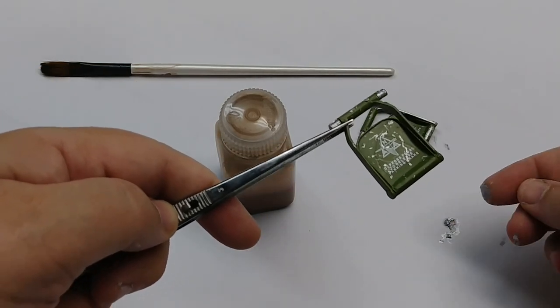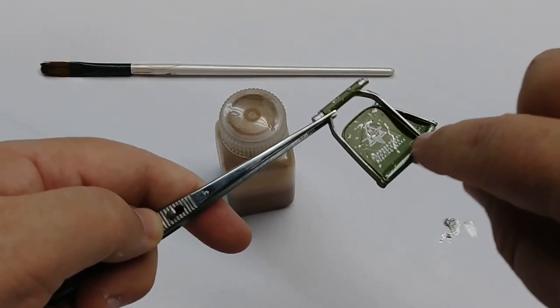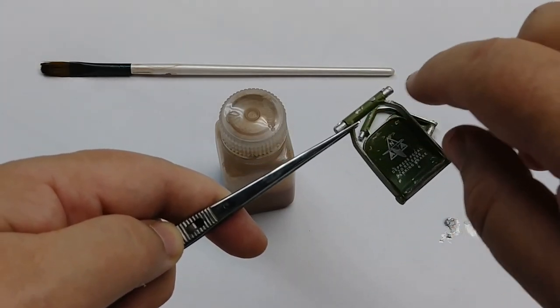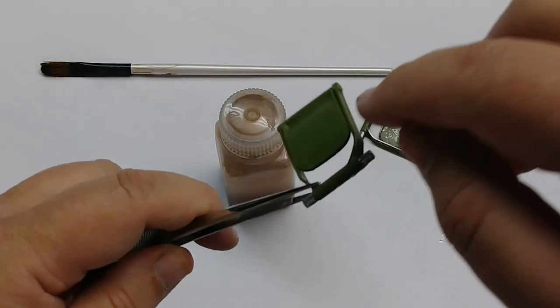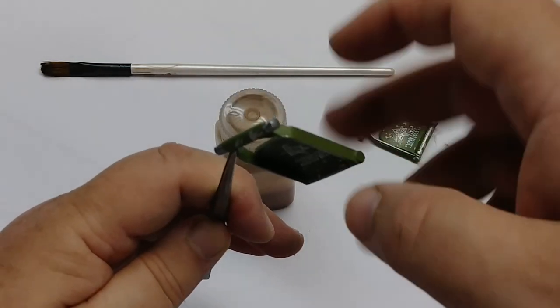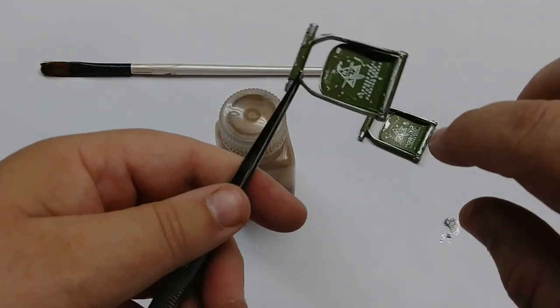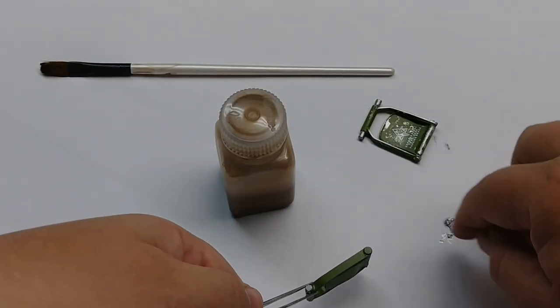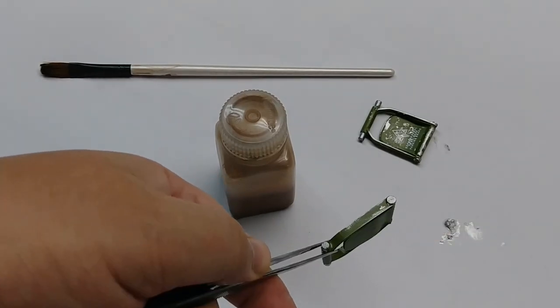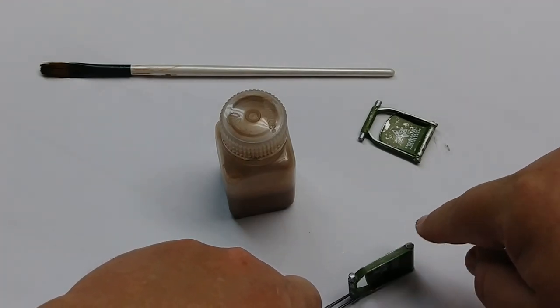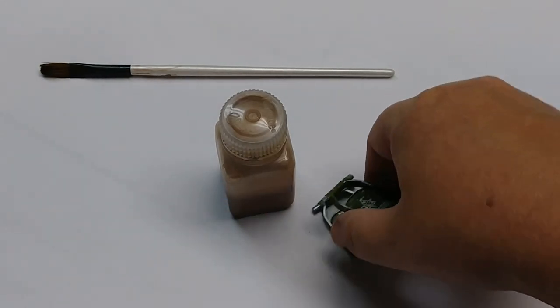You can overdo it so be careful. If you think you've got enough you probably do. Now we're going to do the next step. We're going to put a little bit on the finger, rub the excess off, and I kind of run that along the edges here. Give it that appearance of being worn. So now you can see it's starting to look worn.